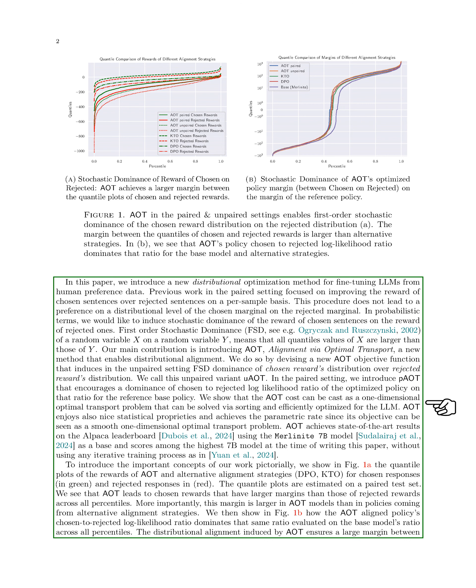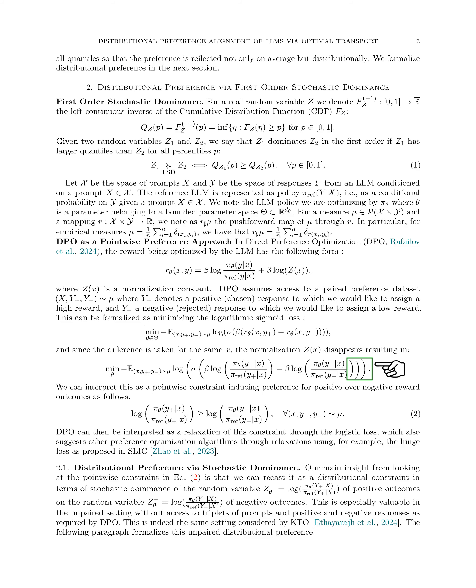Furthermore, we introduce the concept of first-order stochastic dominance, where one random variable dominates another if it has larger quantiles across all percentiles. We formalize this concept to explain how AOT ensures distributional preference alignment. In DPO, the reward optimization is based on the likelihood ratio between the LLM policy and a reference model, aiming to assign high rewards to positive responses and low rewards to negative responses. This approach relaxes the preference constraint through logistic loss, allowing for other preference optimization algorithms.